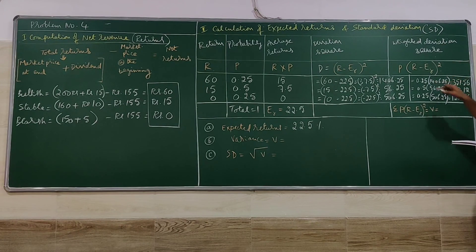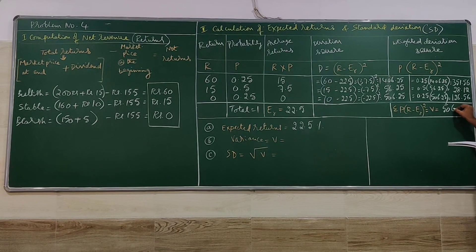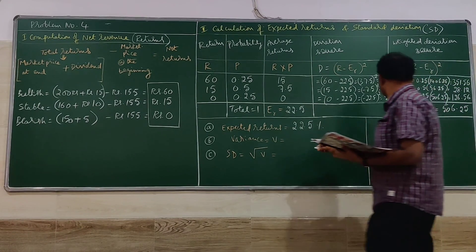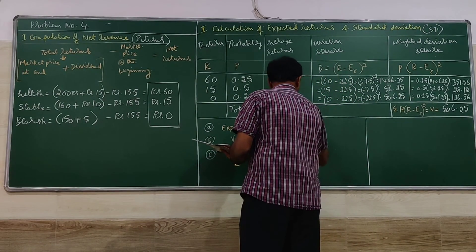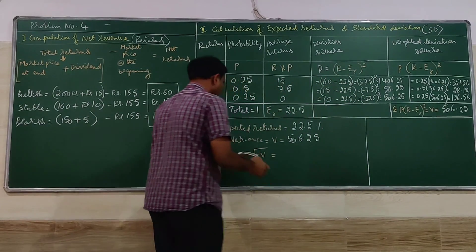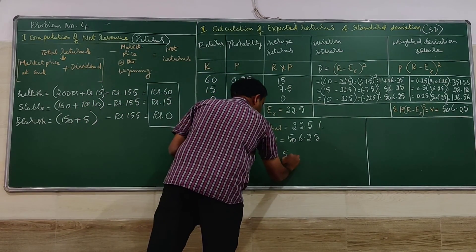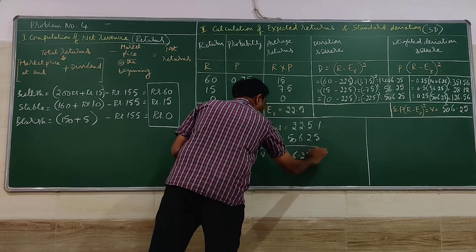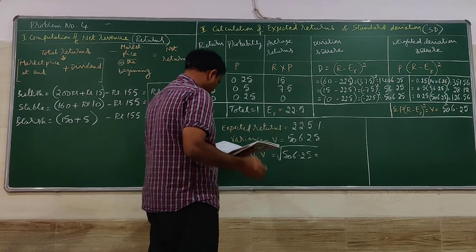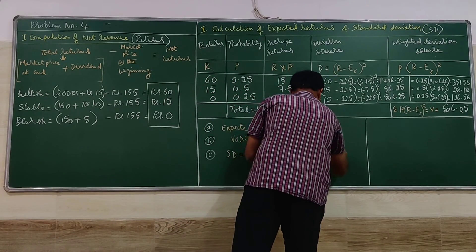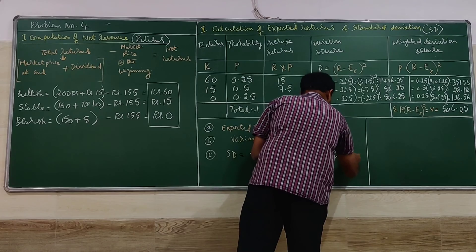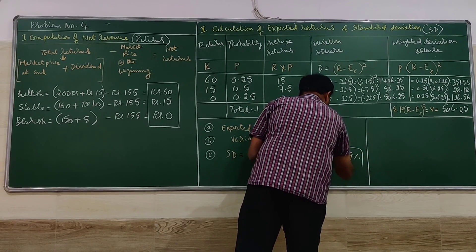Adding all the weighted deviation squares gives the variance: 351.56 + 28.12 + 126.56 = 506.25. The variance is 506.25. The standard deviation is the square root of the variance: √506.25 = 22.49%. So the variability of the return is 22.49%.